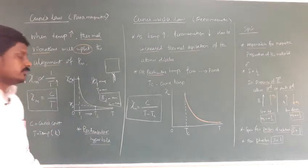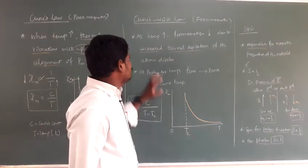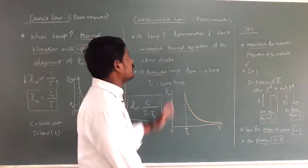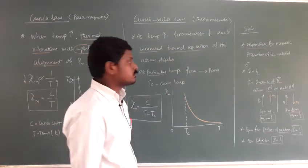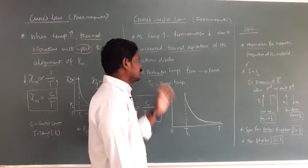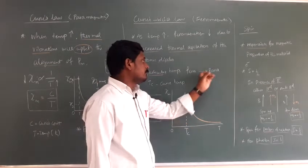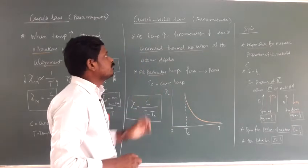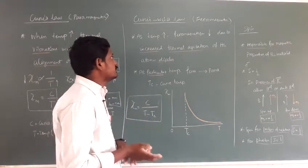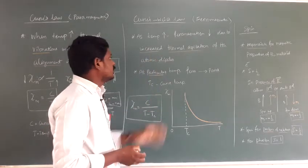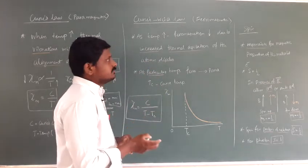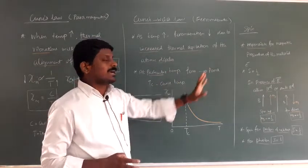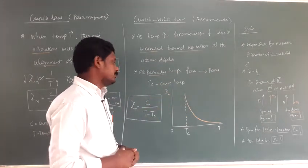Next is the Curie-Weiss law, which applies to ferromagnetic materials. As temperature is increased, thermal agitation of atomic dipoles increases. At a particular temperature, ferromagnetic materials become paramagnetic materials — that temperature is the Curie temperature. So if we increase the temperature, ferromagnetism decreases due to increased thermal agitation in atomic dipoles, resulting in a loss of ferromagnetism.